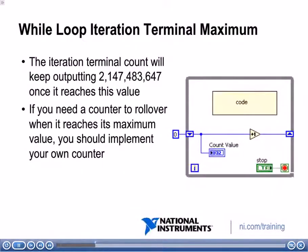Now let's talk about the while loop iteration terminal maximum. If we look at this while loop, notice the iteration terminal — the terminal with 'I' on it. The behavior of this terminal is that once it gets to 2,147,483,647, once it reaches that value, it'll just keep outputting that same number. It's not going to roll over — it's going to saturate at that large number.